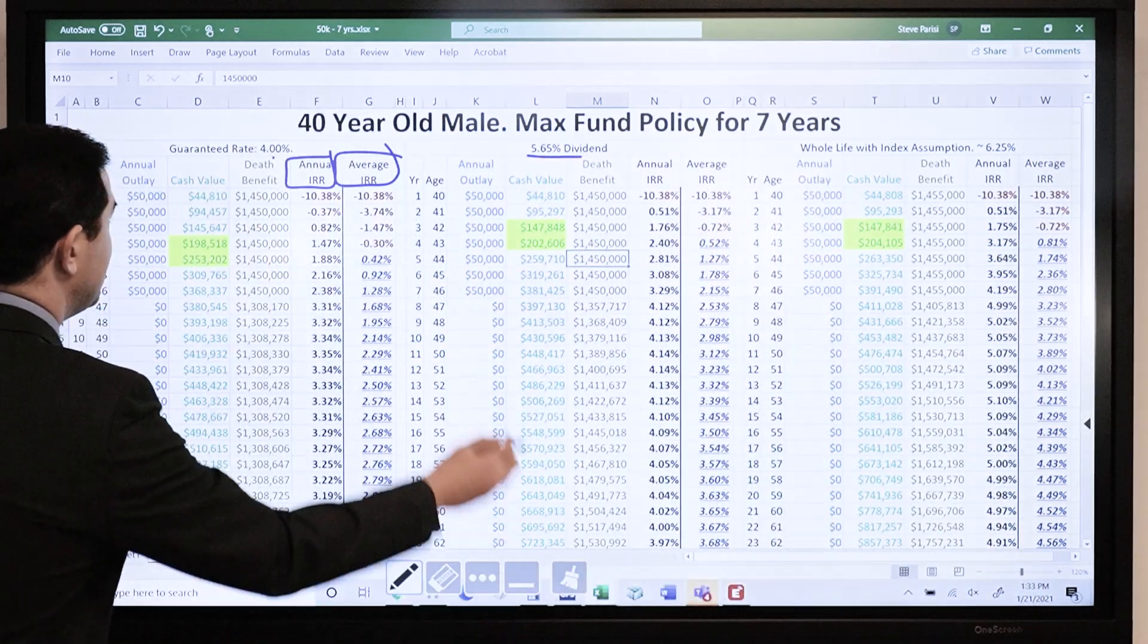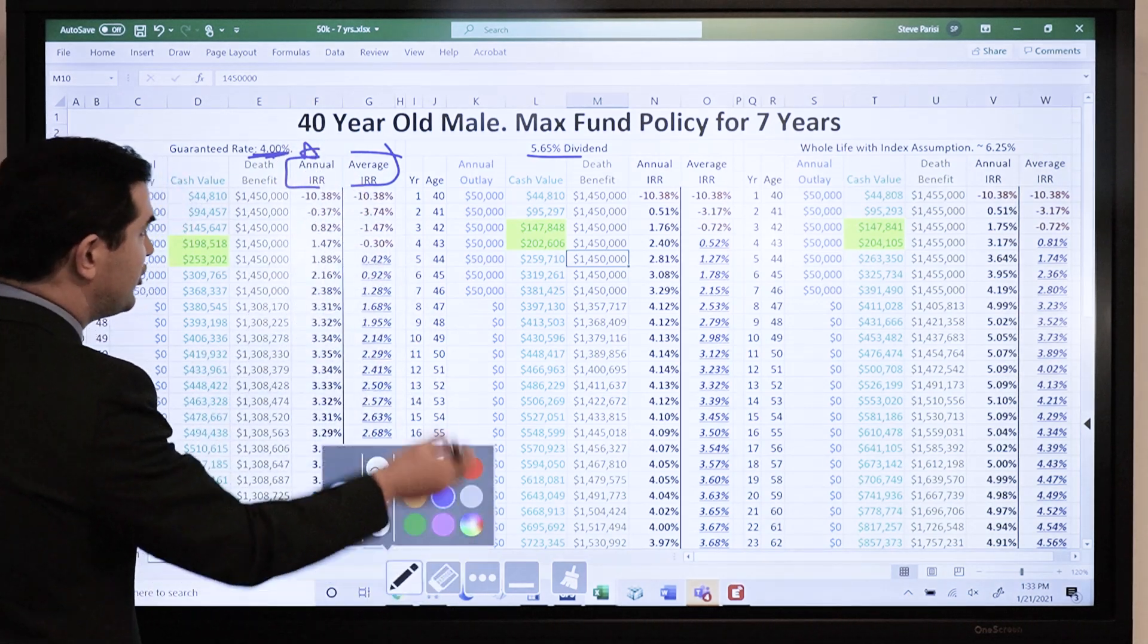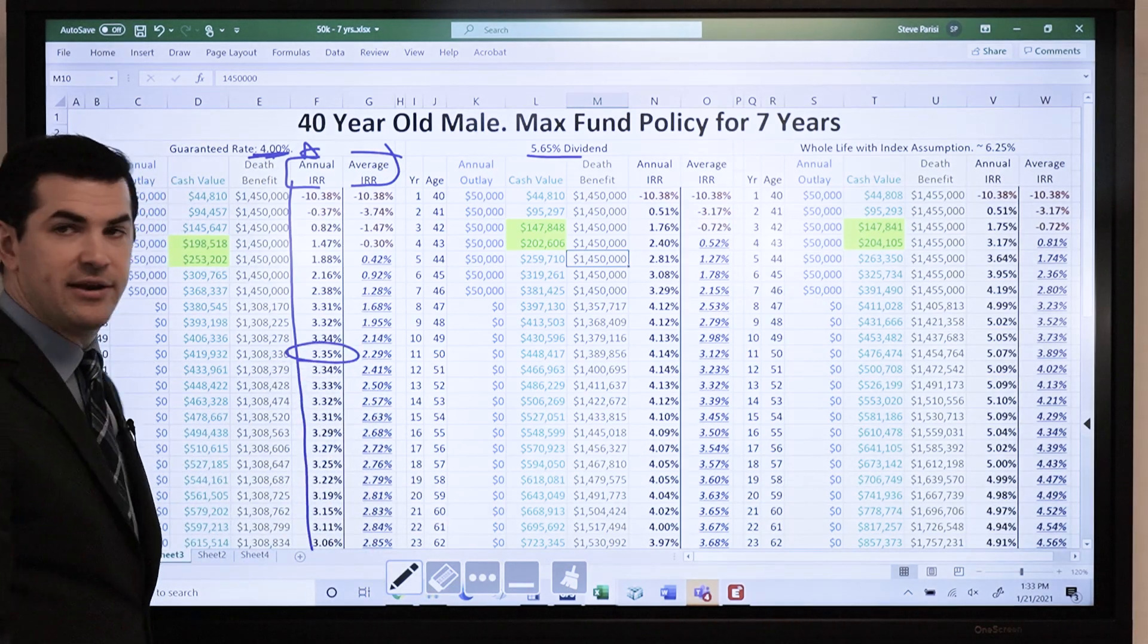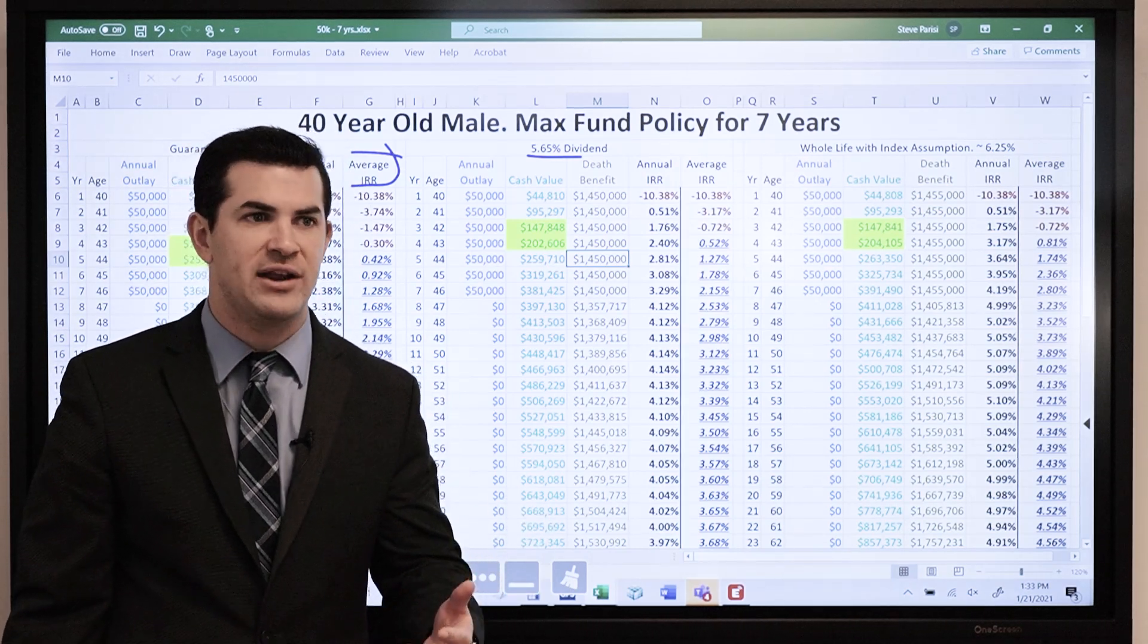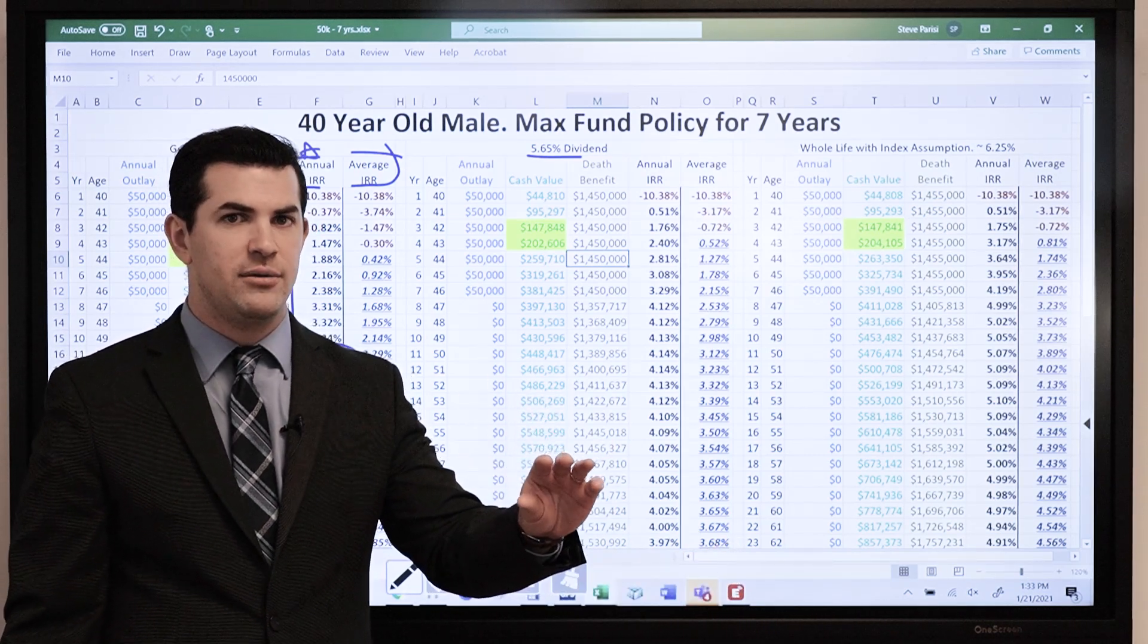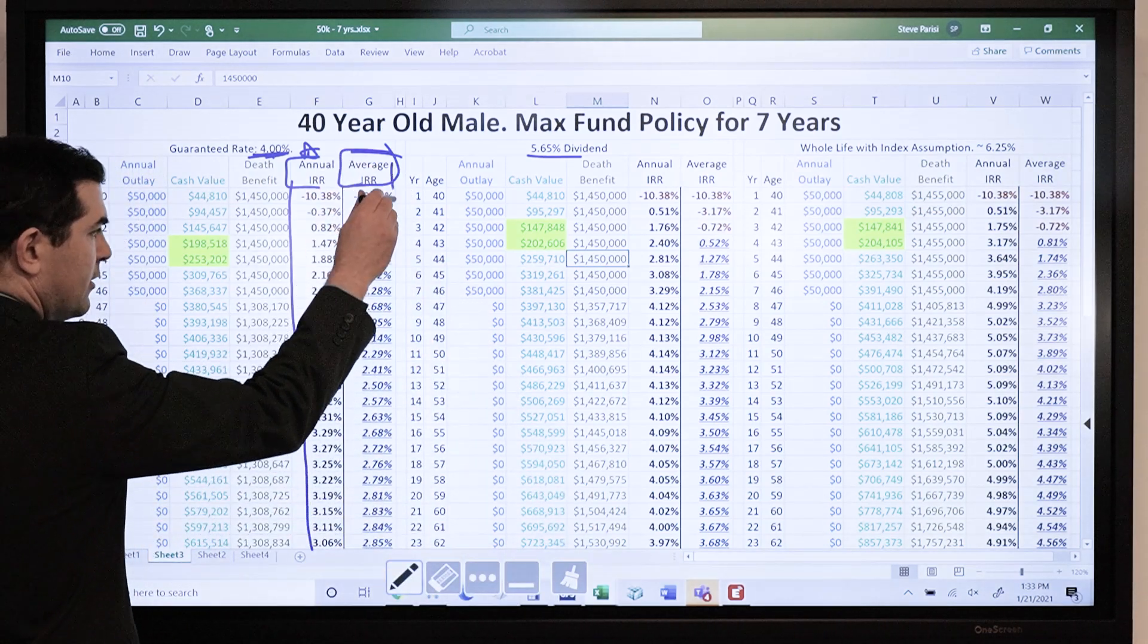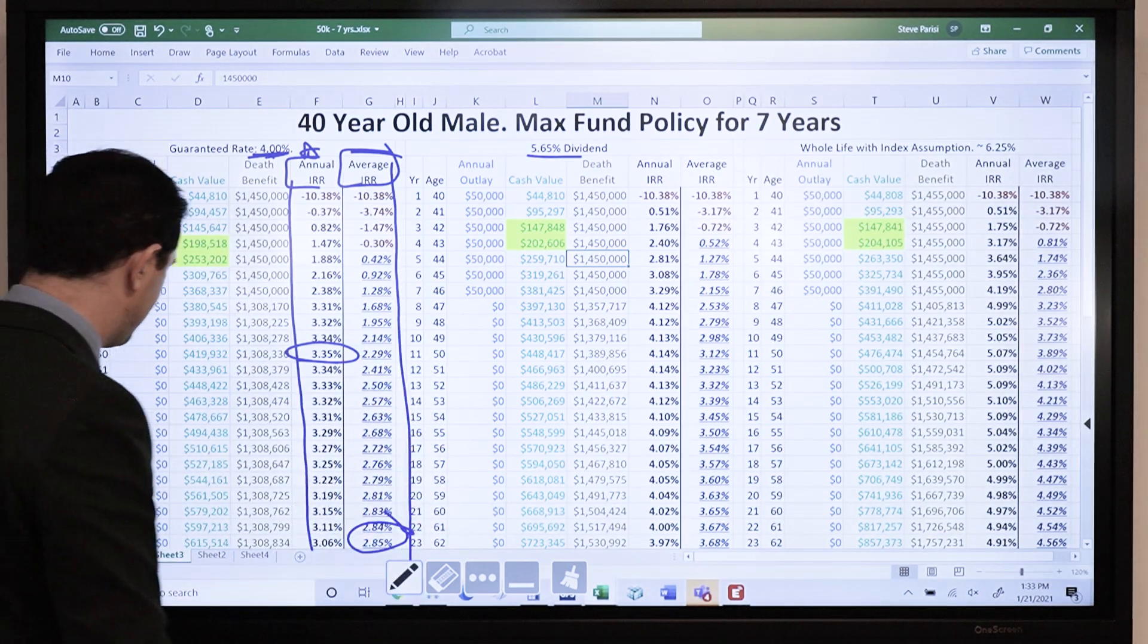On this example with the guarantees, we've got our annual internal rate of return, what you're earning each year. It is a tax-free yield if done properly. Tops out at about 3.35%. Annual internal rate of return represents what you are earning each year. For example, if you said I earned 8% in the market last year, that's what you earned that year. However, over the past 10 years, you may have averaged 5% with all the ups and downs. The annual isolates year to year, whereas the average factors in all years. Average is about 2.85%.